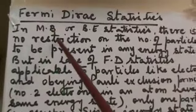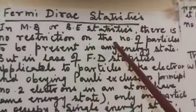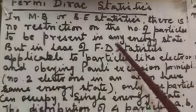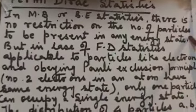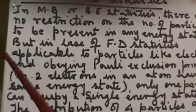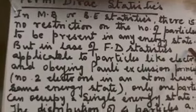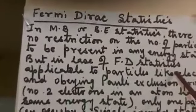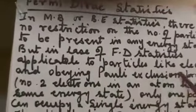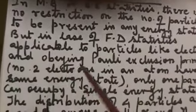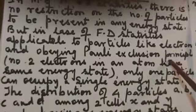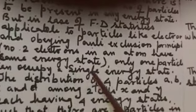In Maxwell Boltzmann, Bose Einstein statistics, there is no restriction on the number of particles to be present in any energy state. But Fermi Dirac statistics is applicable to particles like electrons obeying Pauli's exclusion principle. This says that no two electrons in an atom have the same energy state.